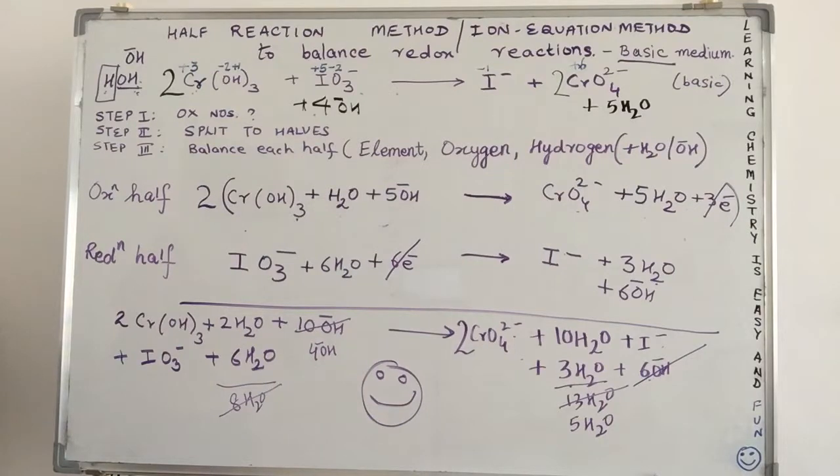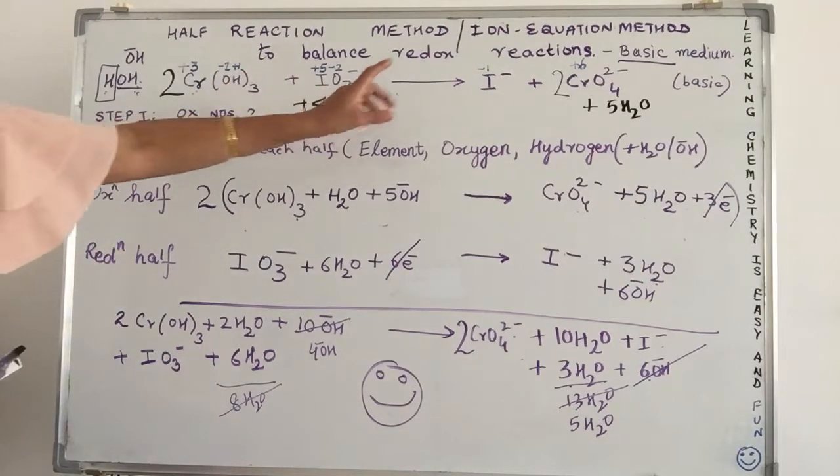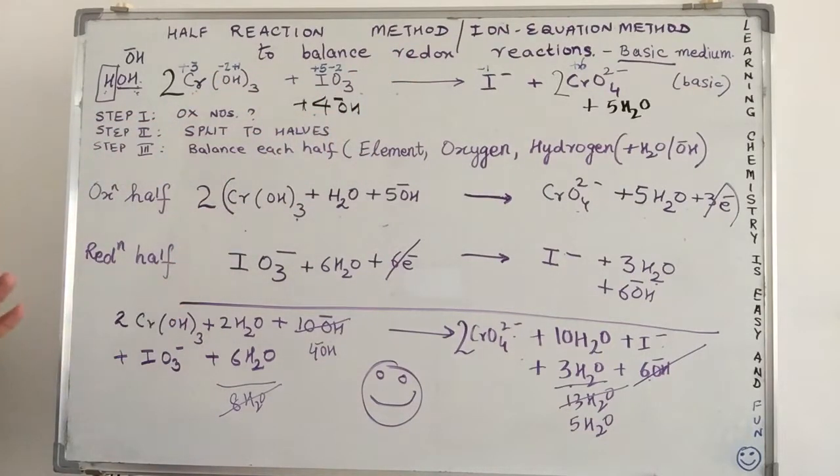Now, please don't feel lazy or don't switch on to, don't jump on to another video. Please, now, take time out. Practice 5 equations of balancing redox reactions in basic medium. Only 5. I am not asking you for more. Just 5. And let me know in your comments if you have been able to relate to the video and if you have been able to understand. Happy studying to all of you.